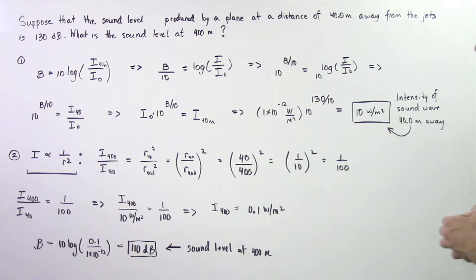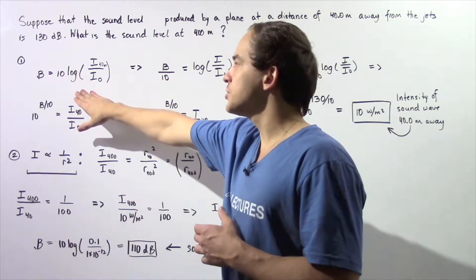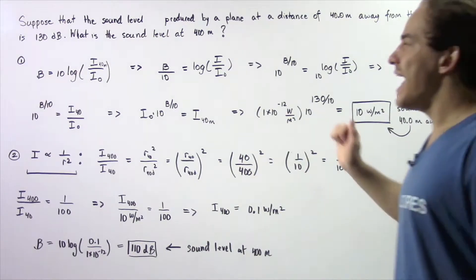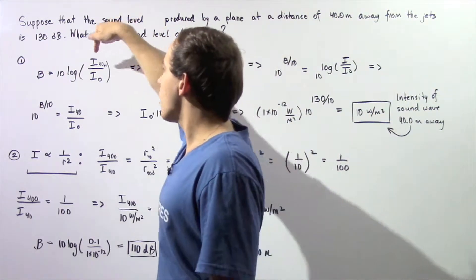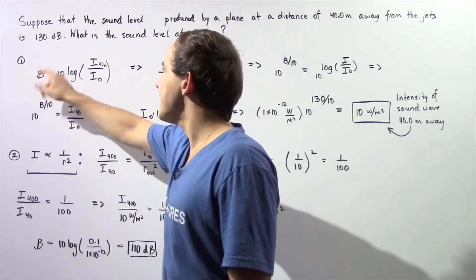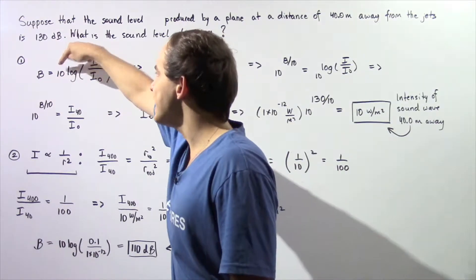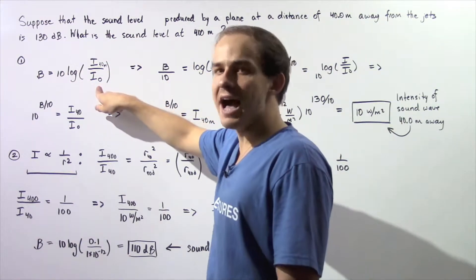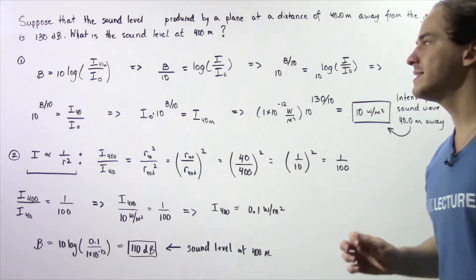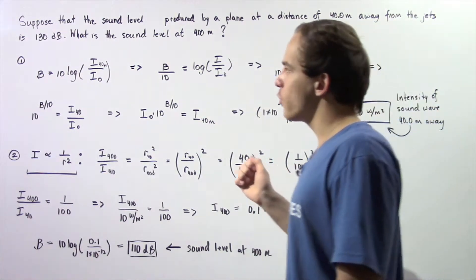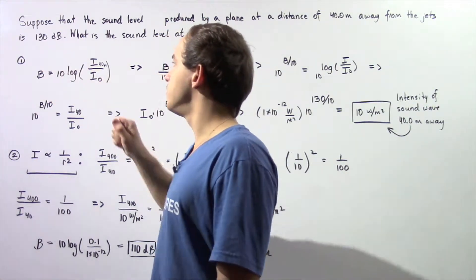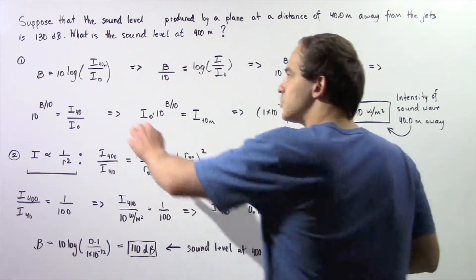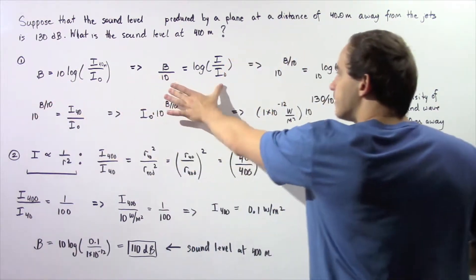We're going to break this problem down into two steps. In step one, we want to use the sound level equation to calculate what the intensity of our sound is at a distance of 40 meters. The equation states that the sound level at 40 meters is equal to 10 multiplied by log of the ratio of the intensity at 40 meters to the intensity I-naught, where I-naught is 1 times 10 to the negative 12 watts per meter squared. We rearrange this equation and solve for I at 40 meters by dividing both sides by 10.